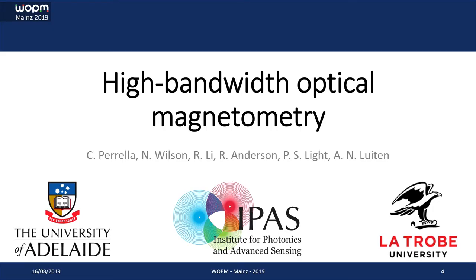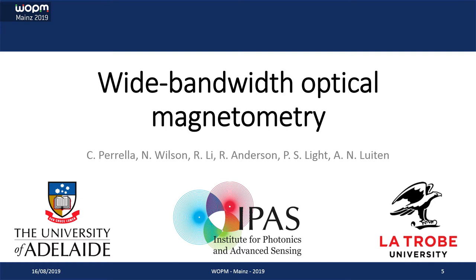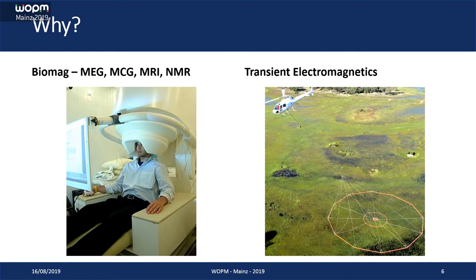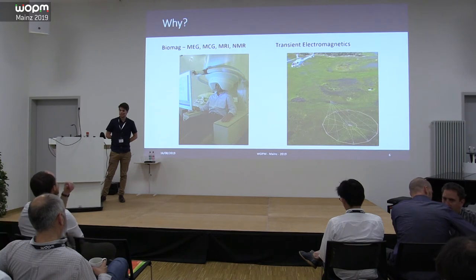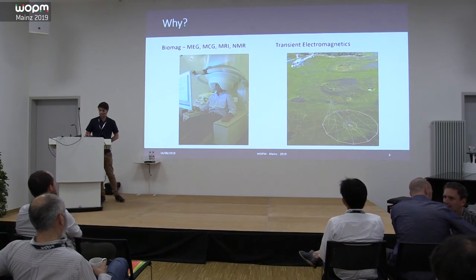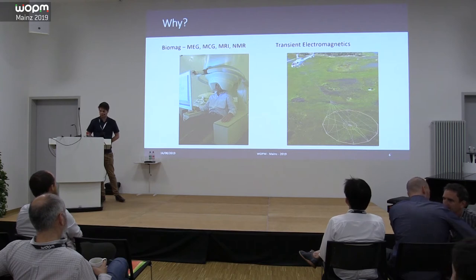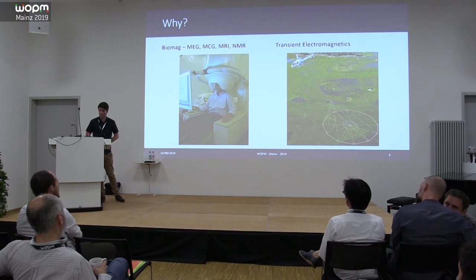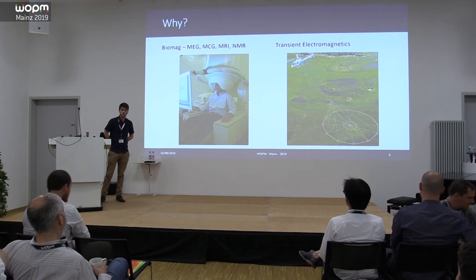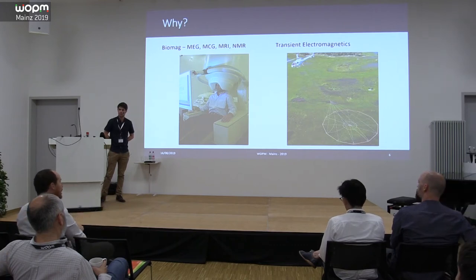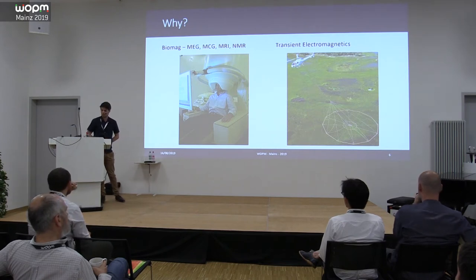Back to science: high bandwidth optical magnetometry. I decided a slightly better title was wide bandwidth optical magnetometry. Why would we want to do something like this? Victor gave a pretty good introduction to it earlier this morning. For applications such as biological imaging using magnetometers — MEG, MCG, MRI, NMR — you might want bandwidths which go above the normal 100 Hz, or even above a kilohertz sometimes. Also for transient electromagnetics, pulsing big RF fields into the ground and seeing what comes back, you want a magnetometer able to operate during that kind of large perturbation in the background field.